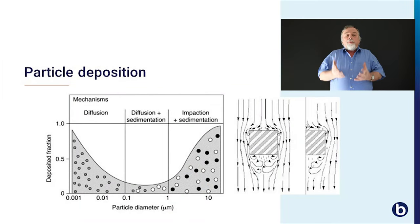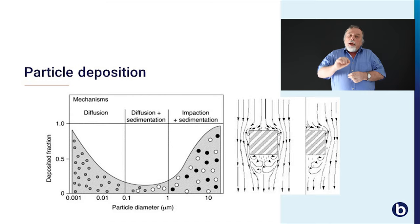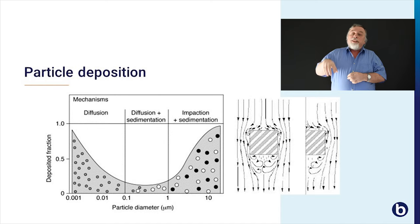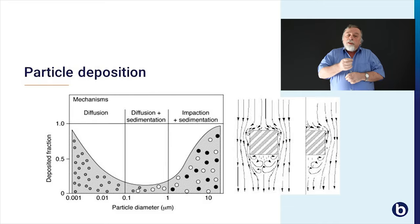Particle deposition. On the left you see a diagram showing the relation between particle size and deposition. For particles larger than one micrometer, you can see those which deposit by gravitation or by impaction. For particles smaller than one micrometer, we come into the area where particles are moved by Brownian motion, by diffusion, and they also deposit on surfaces. When looking at particle deposition in clean rooms, in relation to operational quality, we focus on particles larger than one micrometer.